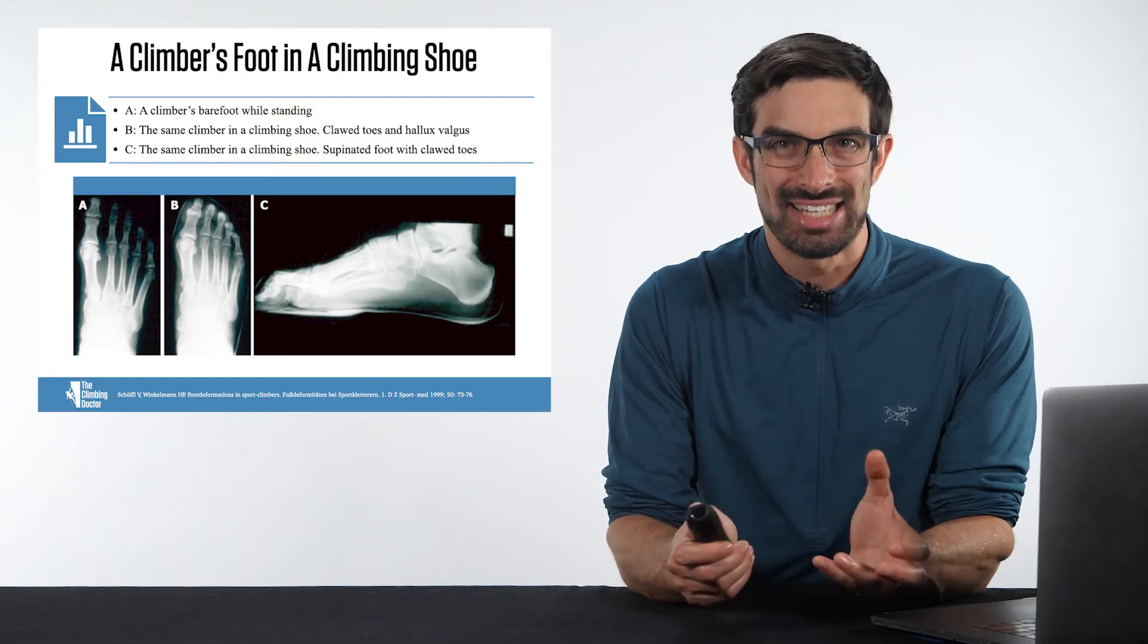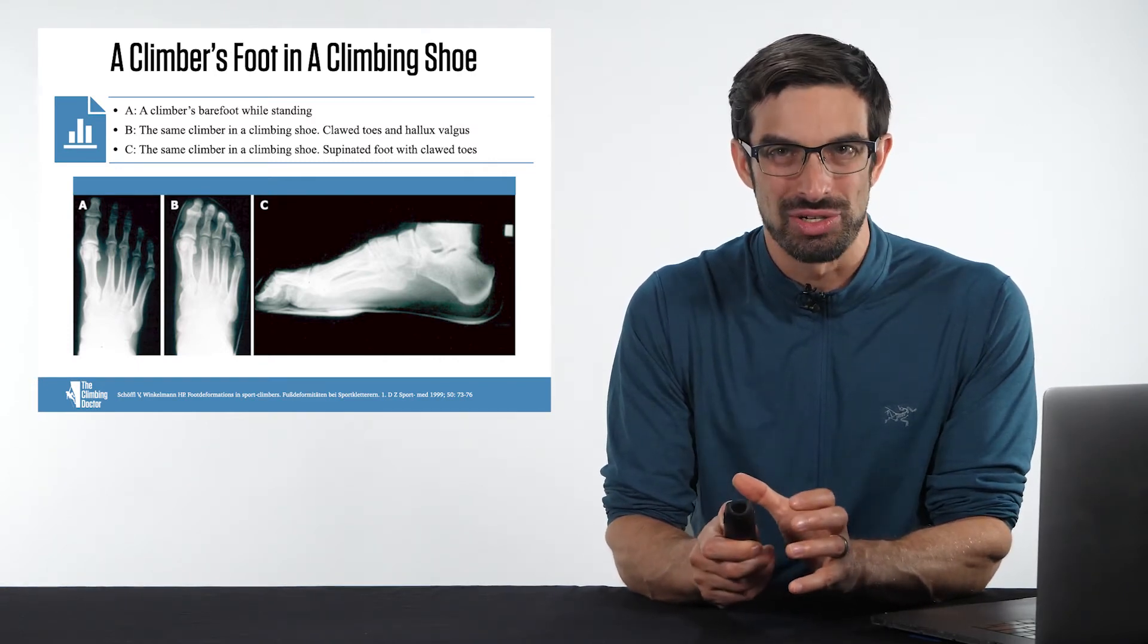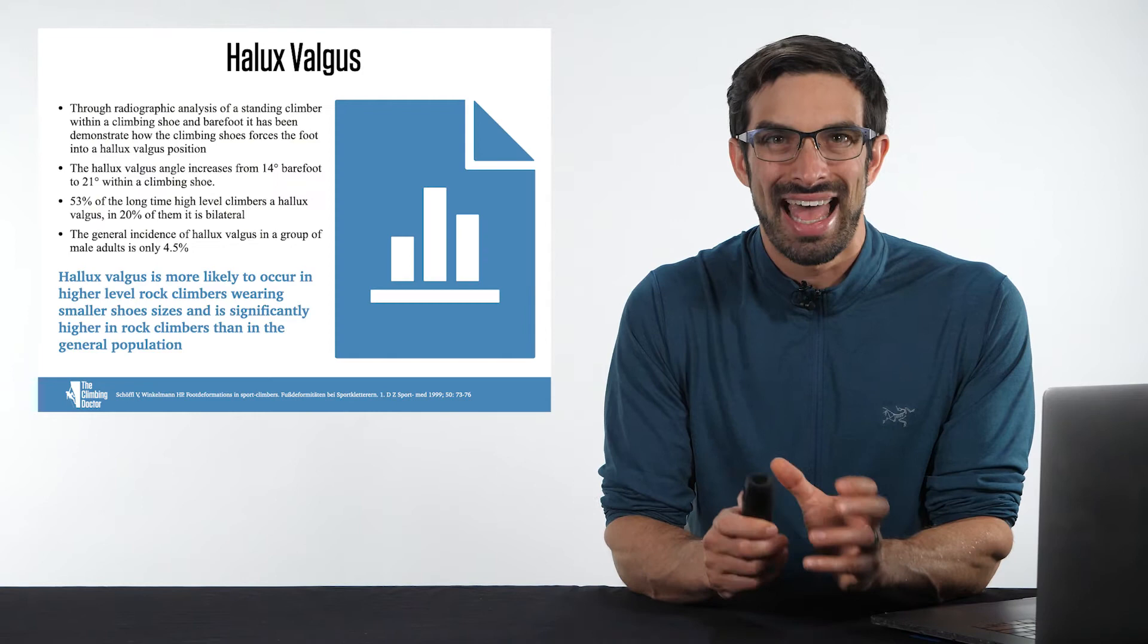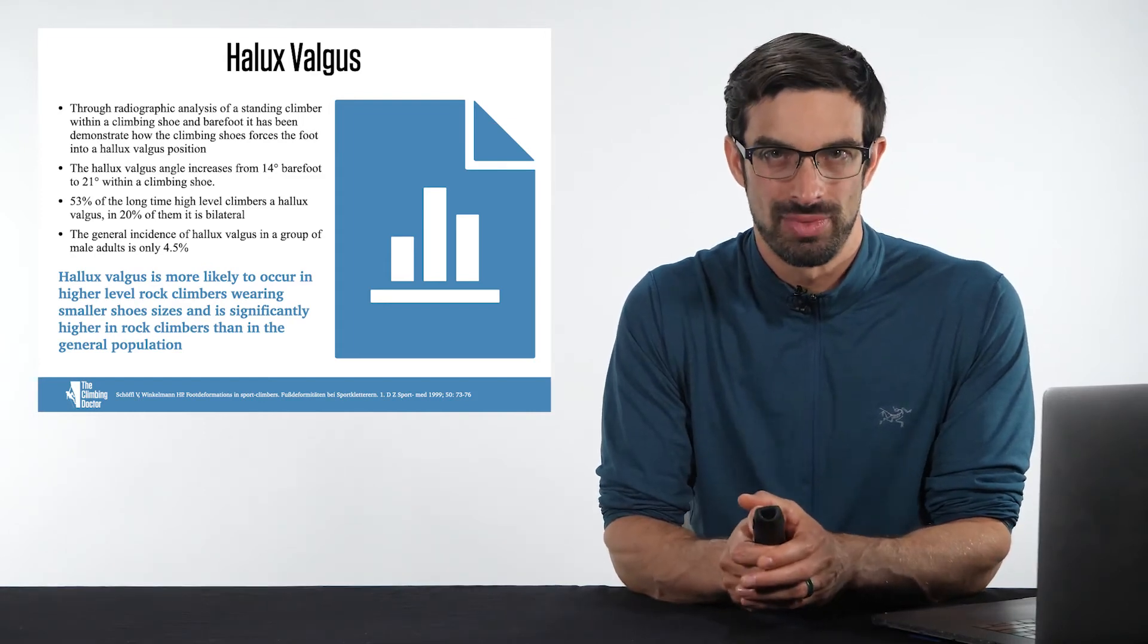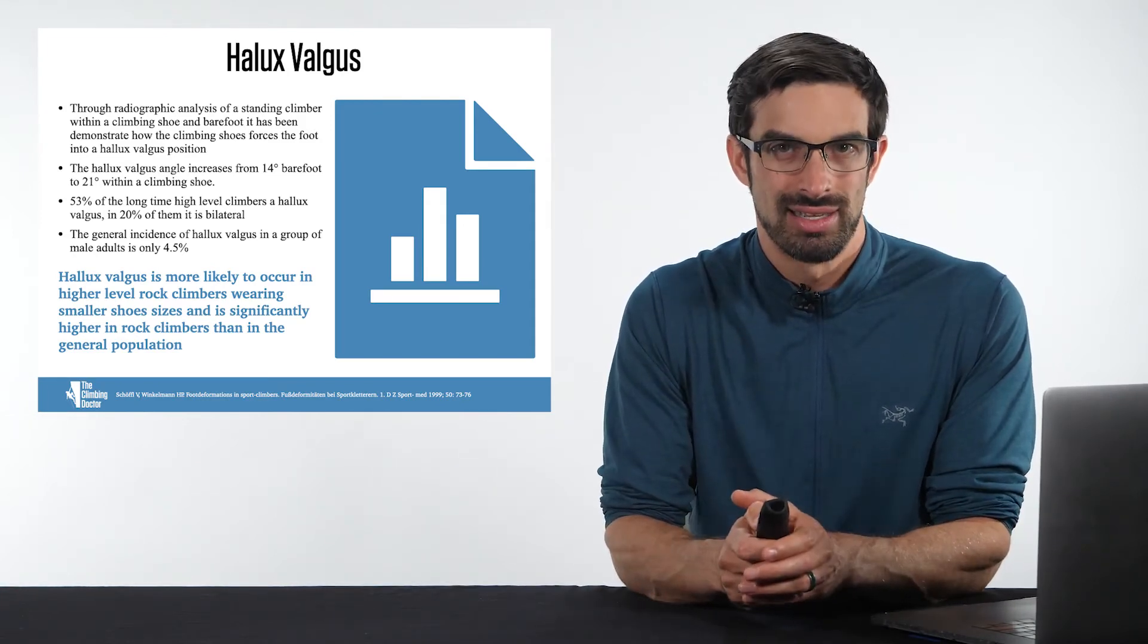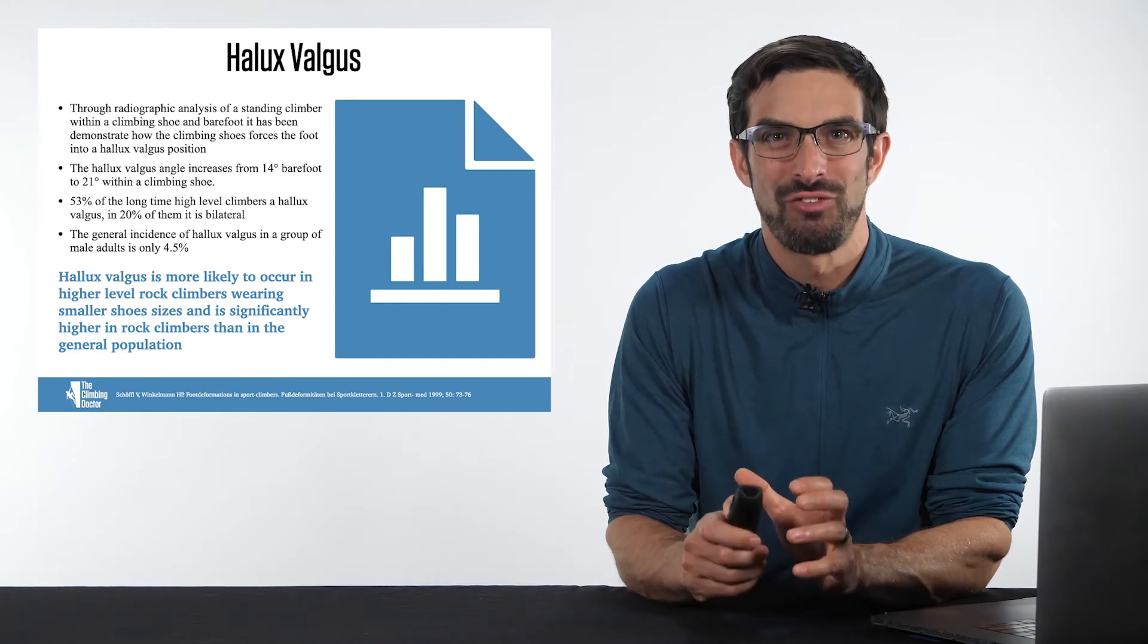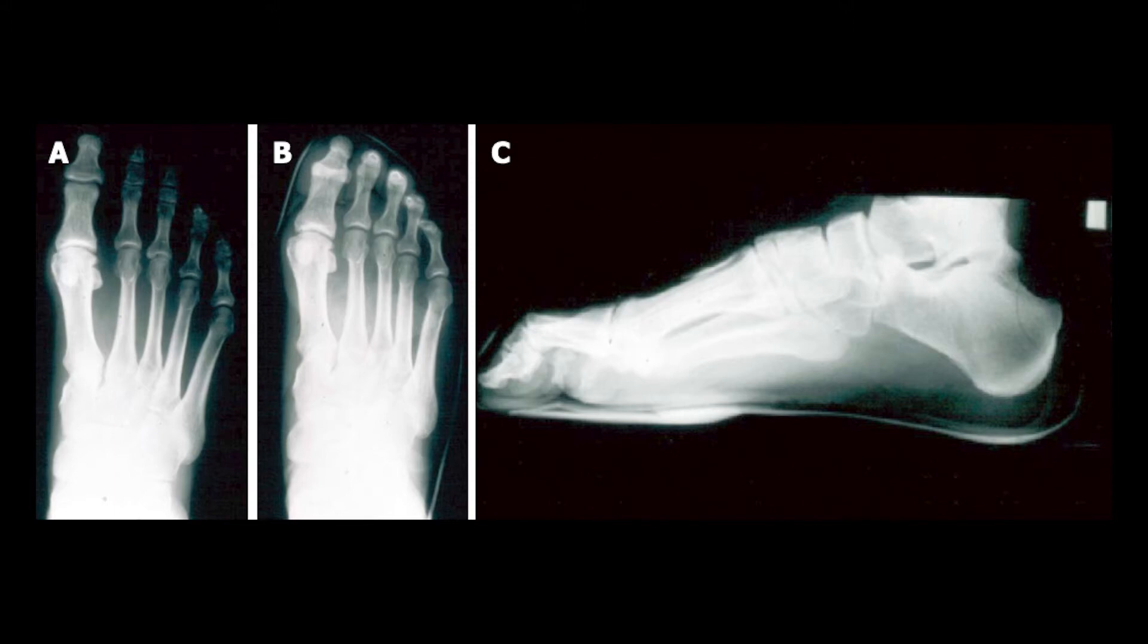Schoffel and colleagues took it one step further. They showed that the hallux valgus angle increases 14 degrees when barefoot to 21 degrees when placed in a climbing shoe. 53% of the long-time high-level climbers in this study had hallux valgus, and 20% had it bilaterally. To compare, only 4.5% of the general population has it. When in a climbing shoe, hallux valgus may increase up to 7 degrees.